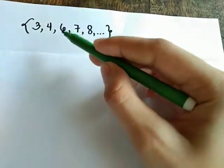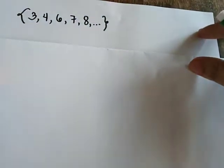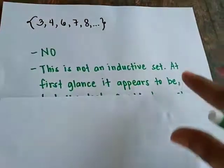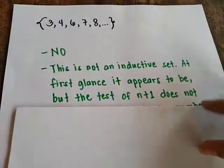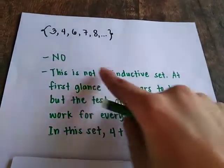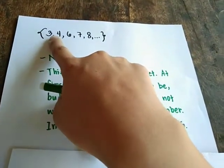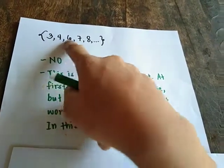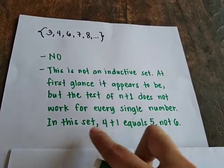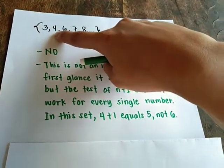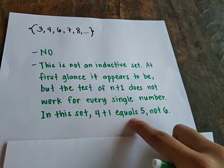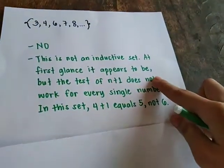Next, consider the set: 3, 4, 6, 7, 8, and so on. Is this an inductive set or not? No, this is not an inductive set. At first glance, it appears to be, but the test of n plus 1 does not work for every single number. At first glance it seems fine, but when we reach the third term, n plus 1 no longer works. In this set, if we test the second term: 4 plus 1 equals 5, and not 6. That's why it is not an inductive set.